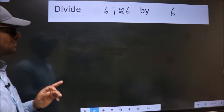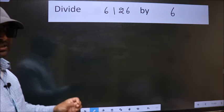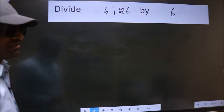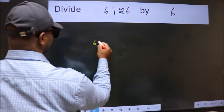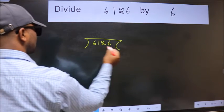Divide 6126 by 6. To do this division, we should frame it in this way: 6126 here, 6 here.